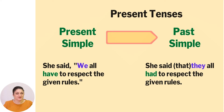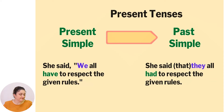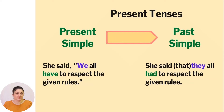The first tense we are going to discuss today is present simple. If you want to report a sentence from present simple, we have to use past simple in the reported sentence. For example: 'She said we all have to respect the given rules.' Here 'have' is present simple. The reported example is: 'She said that they all had to respect the given rules.' You can notice that 'have' changed into 'had', and the pronoun 'we' transformed into 'they'.